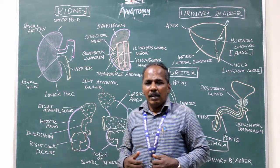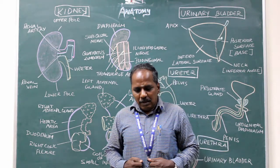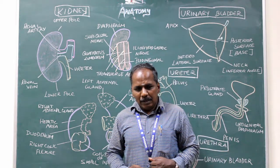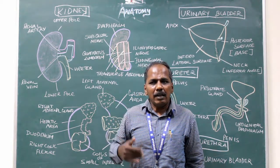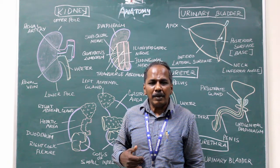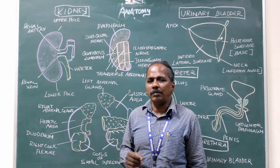Situation. The right kidney is situated somewhat lower than the level of the left kidney, since the liver occupies the right hypochondrium.